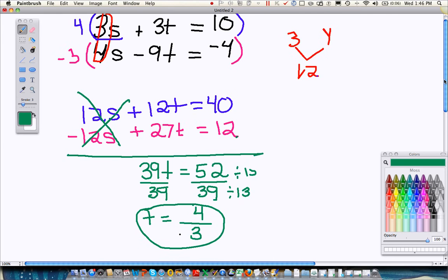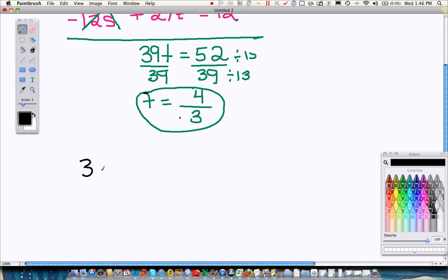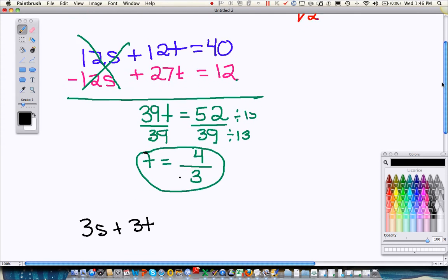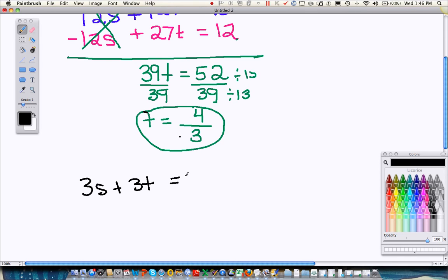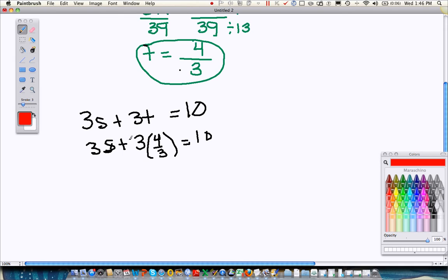Now you're not quite done yet, because we do have to find S. So I'm going to take my original equation, and it doesn't honestly matter what original equation you use. I'm just going to use the top one. So 3S plus 3T equals 10. And what we want to do is fill this 4 thirds in for T. Now what I'm going to notice is the 3 on the top and the bottom cancel. So what I'm left with is 3S plus 4 equals 10. And I'll go ahead and solve and divide to finish out my solving.